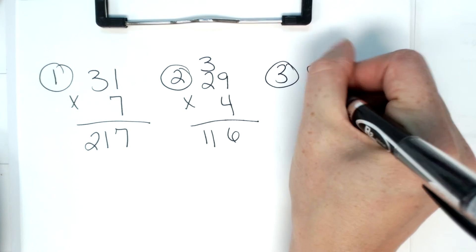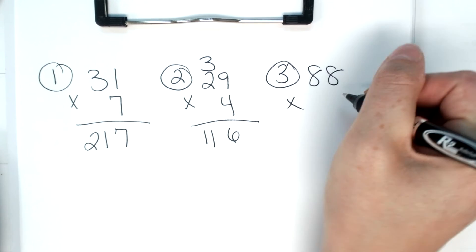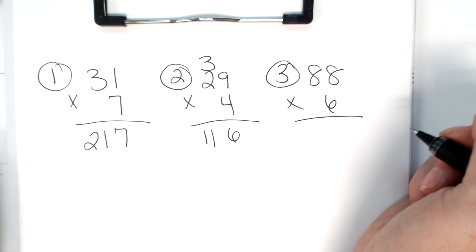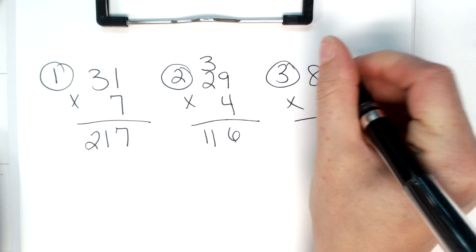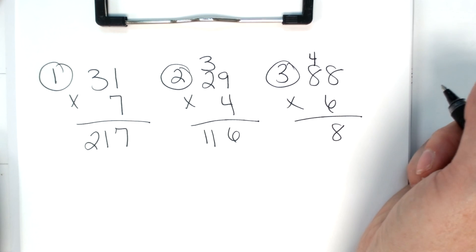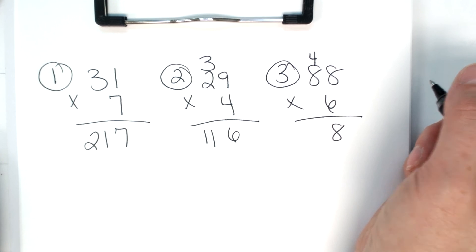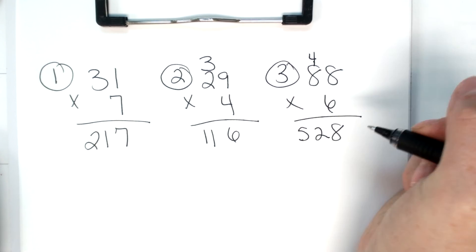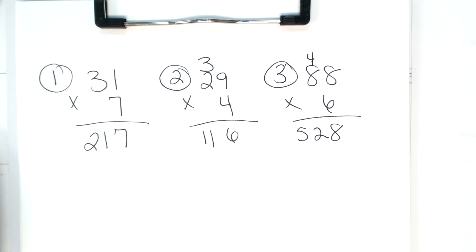And the last one I'll do for you, because these are quick and simple, 88 times 6. 6 times 8 is 48. 6 times 8 again is 48. And then 48 plus the 4 that you carried is 52. So 88 times 6 is 528.